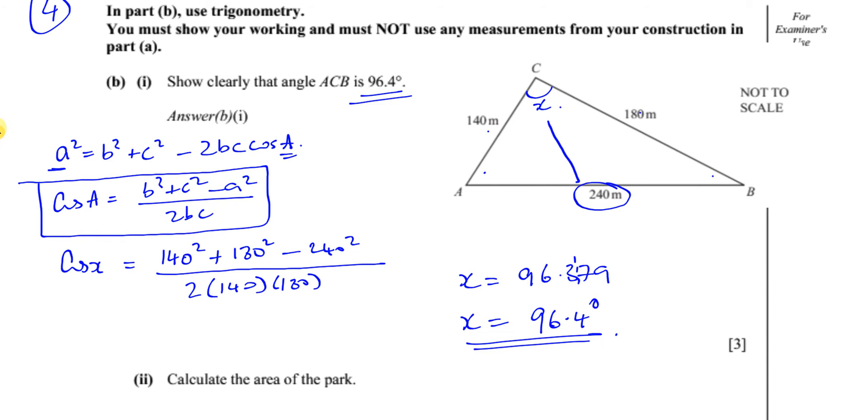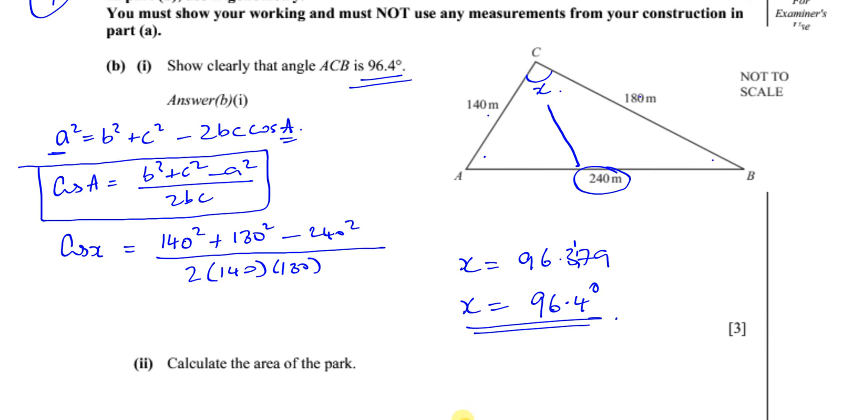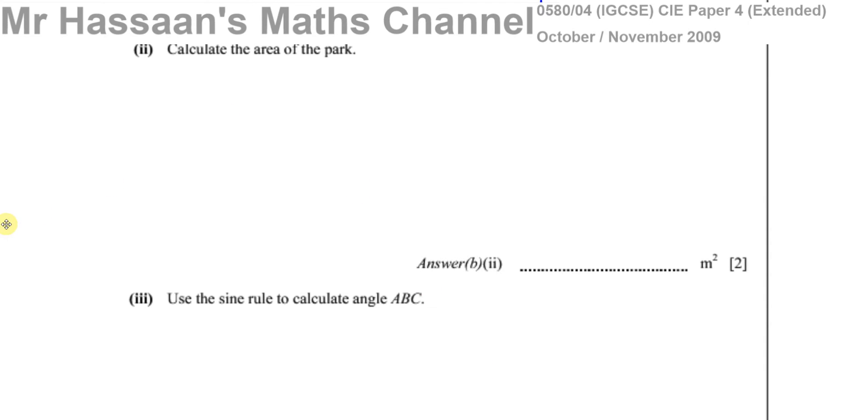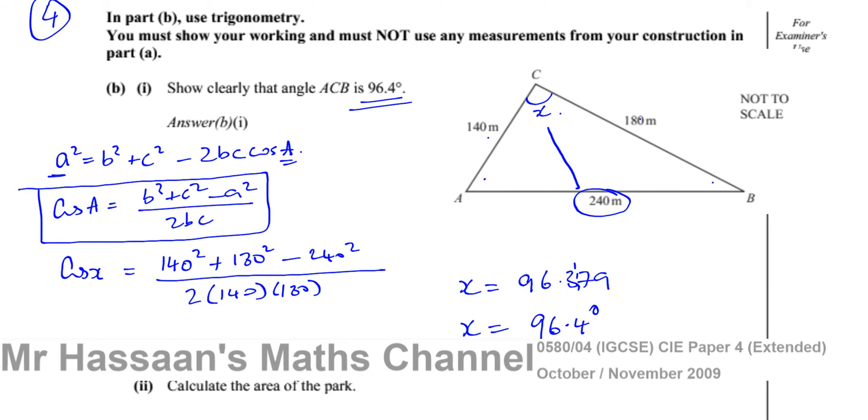Then it says for number 2, it says calculate the area of the park. To find the area of the park, what we need to do is to realize that we have here a triangle which is not right-angled. And to find the area of a triangle such as this, then what we can do is we can use a formula that the area equals a half a, b, sine c.